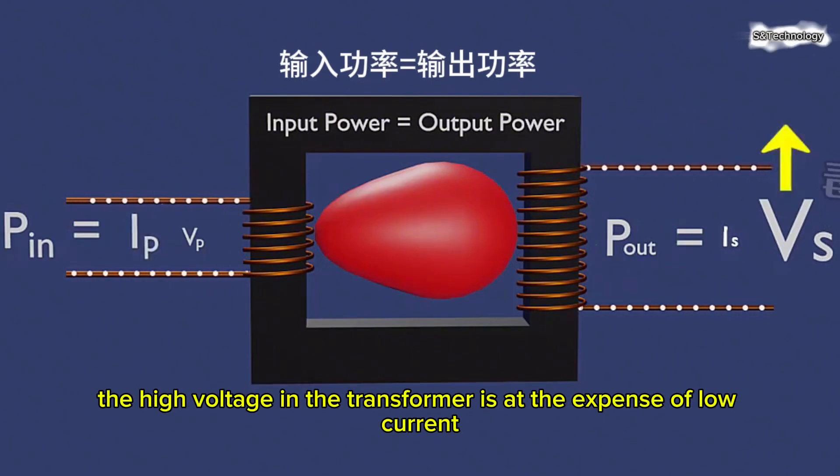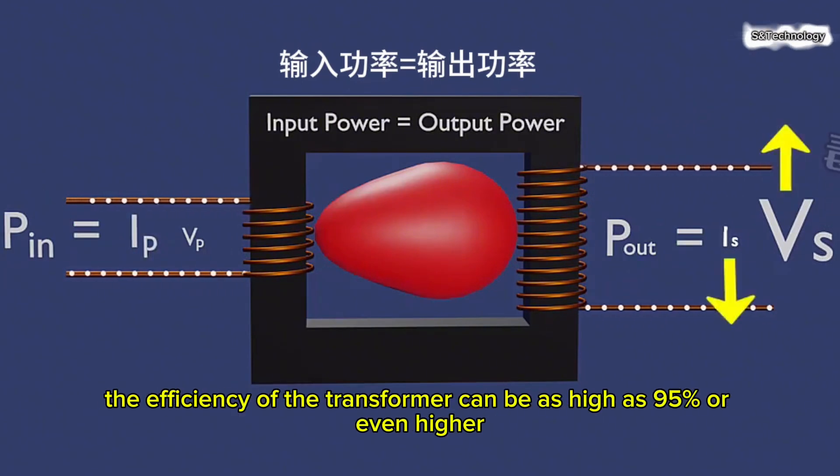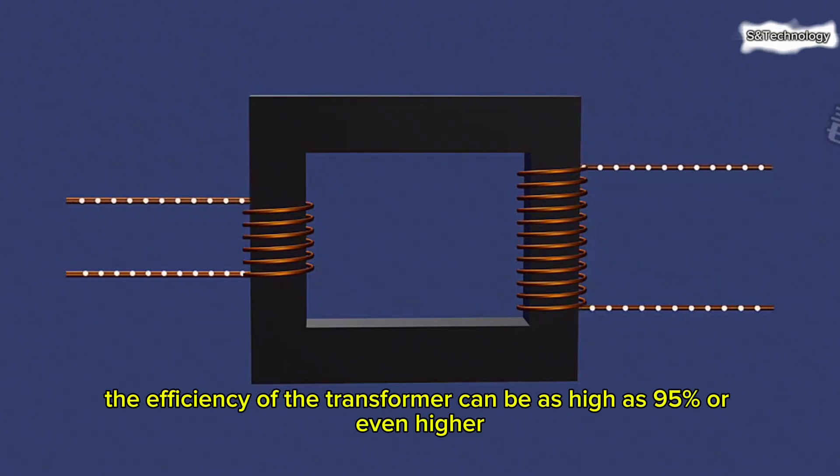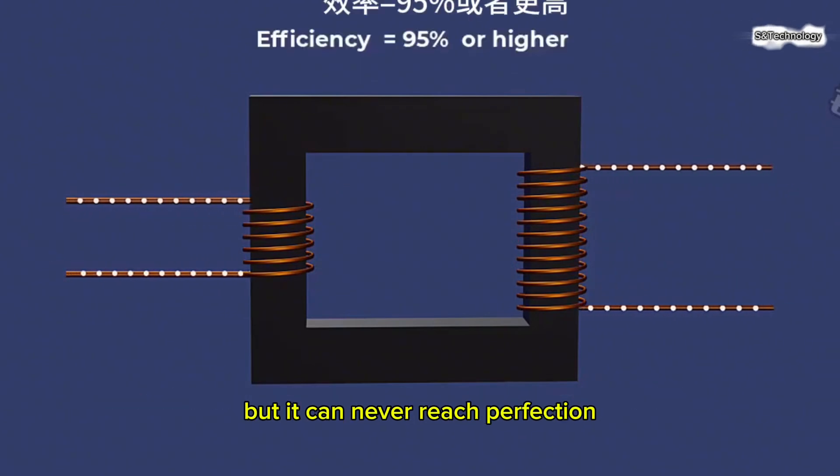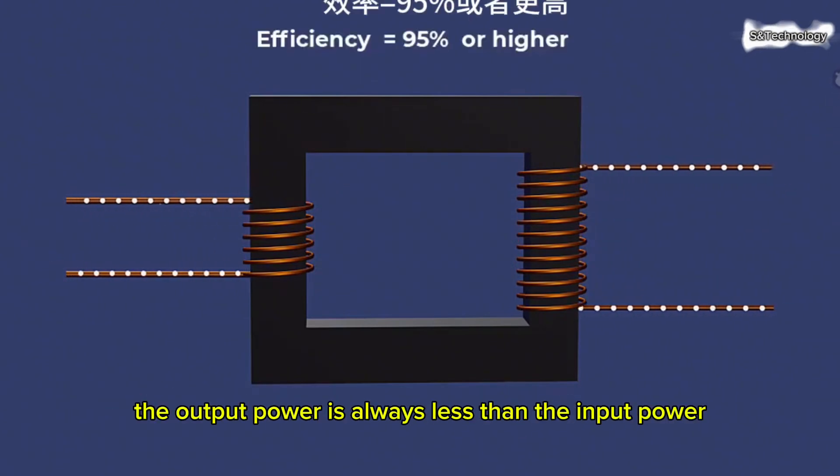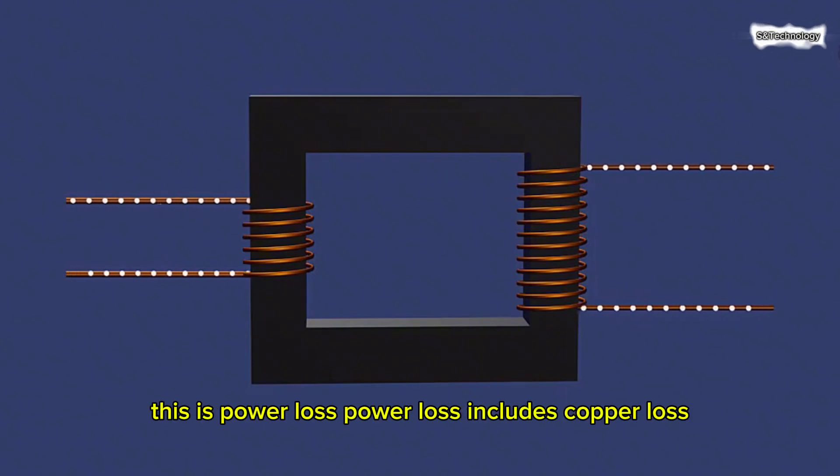In short, the high voltage in the transformer is at the expense of low current. The efficiency of the transformer can be as high as 95% or even higher, but it can never reach perfection. The output power is always less than the input power. This is power loss.